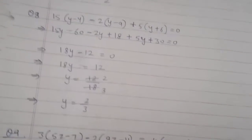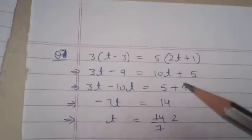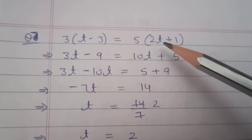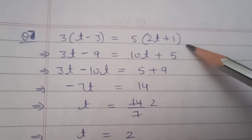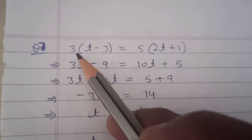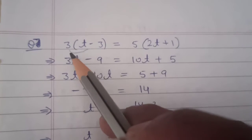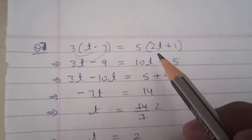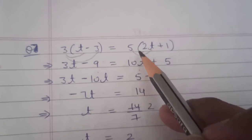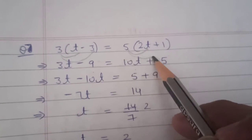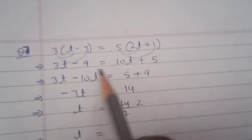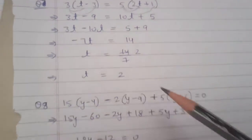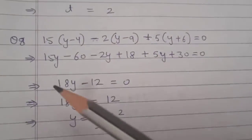Question 7: this is a simpler question. 3 times (T minus 3) equals 5 times (2T plus 1). The 3 multiplies both terms: 3T and 3 times 3 equals 9. On the right side, 5 times 2T is 10T and 5 times 1 is 5. Bring variables to one side and constants to the other, and T comes out to 2.